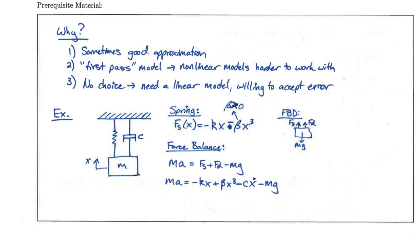Let's take an example. We have a mass-spring-damper system, but instead of treating the spring as linear, we assume it has a cubic form. The force in the spring is negative kx (the linear portion) minus beta*x³, which makes the spring stiffen as it goes. We assume beta is a positive constant, and k is also a positive constant.